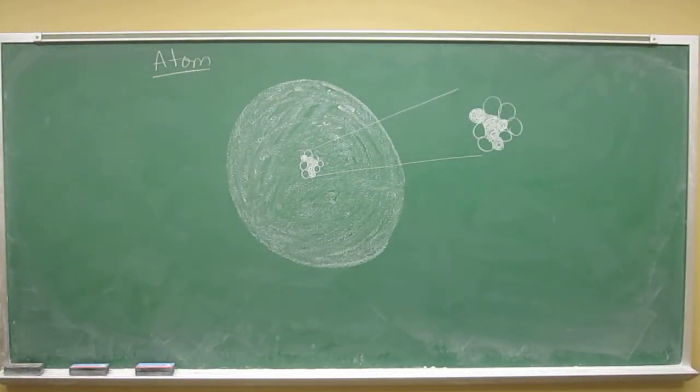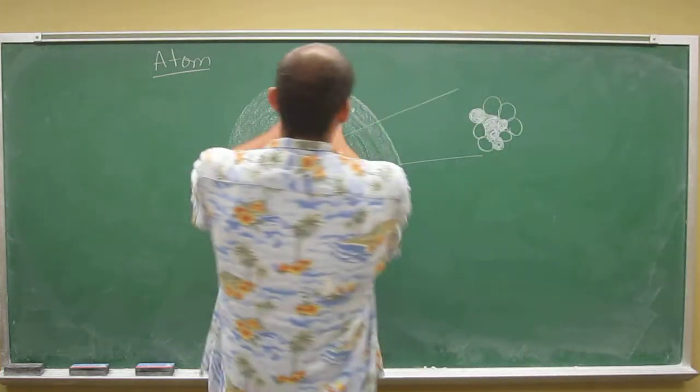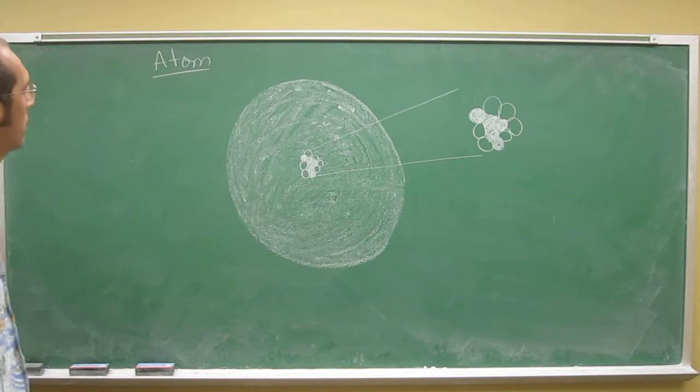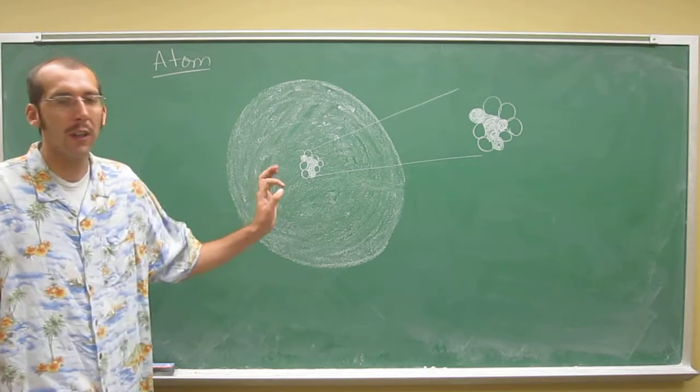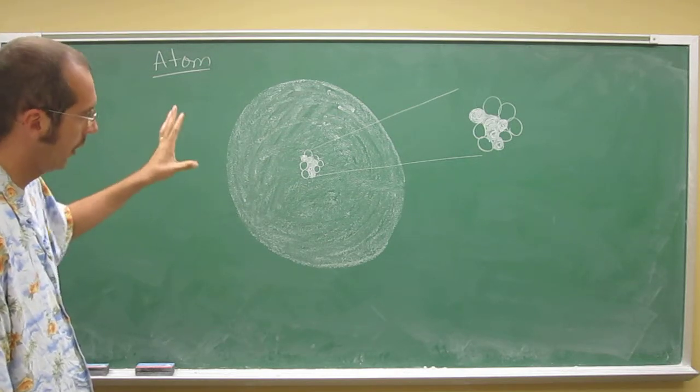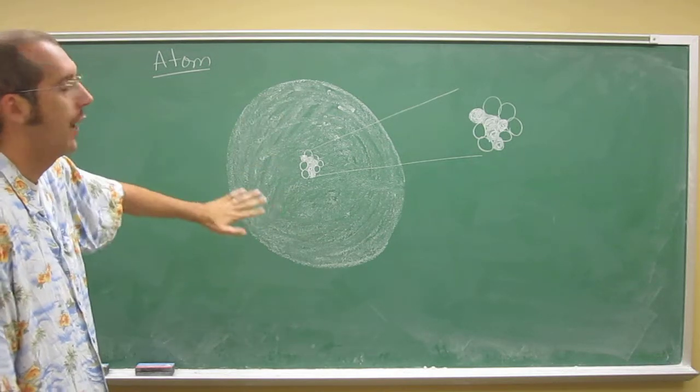Which subatomic particles are represented by the outer white sphere? So, subatomic particles—well, remember electrons really aren't little things, little particles. They kind of are, but they're more like a cloud or a wave.